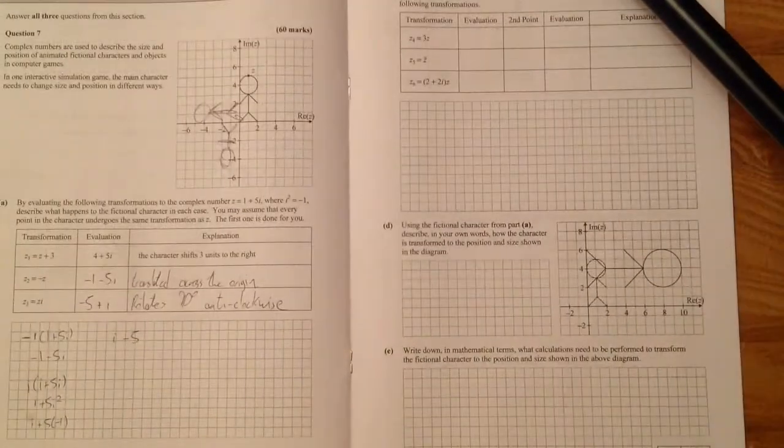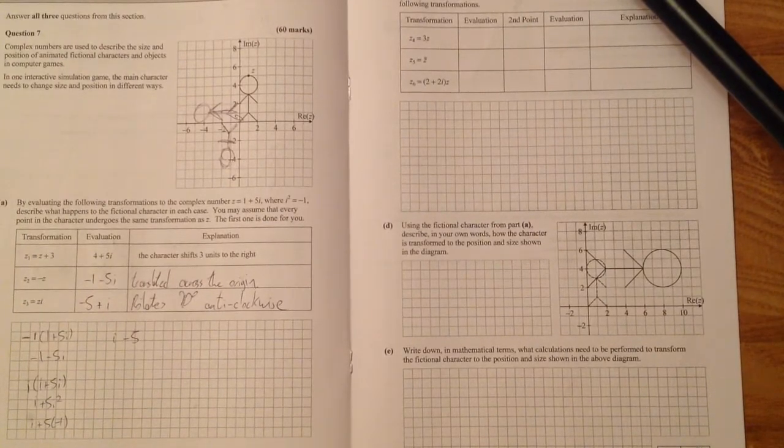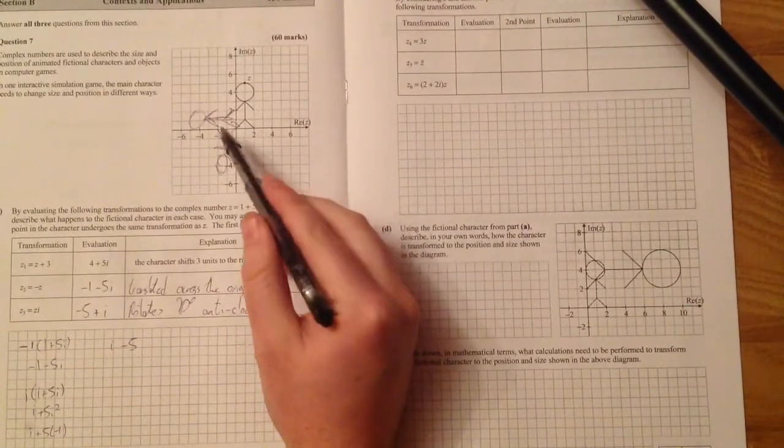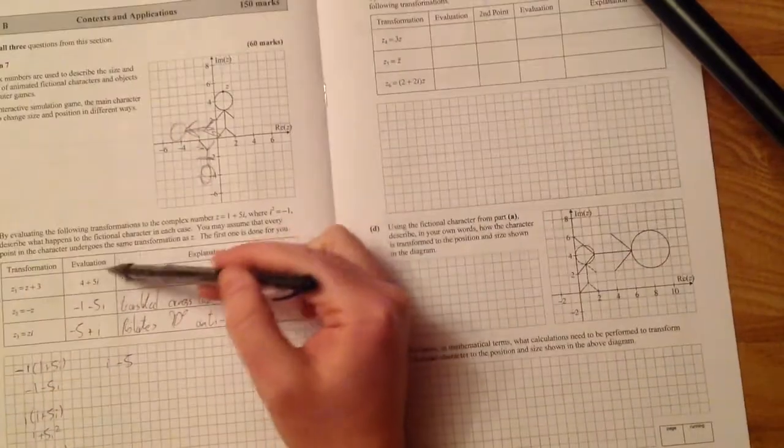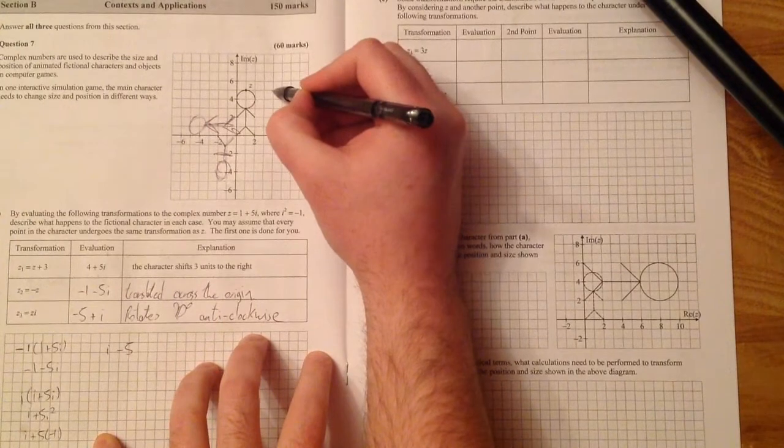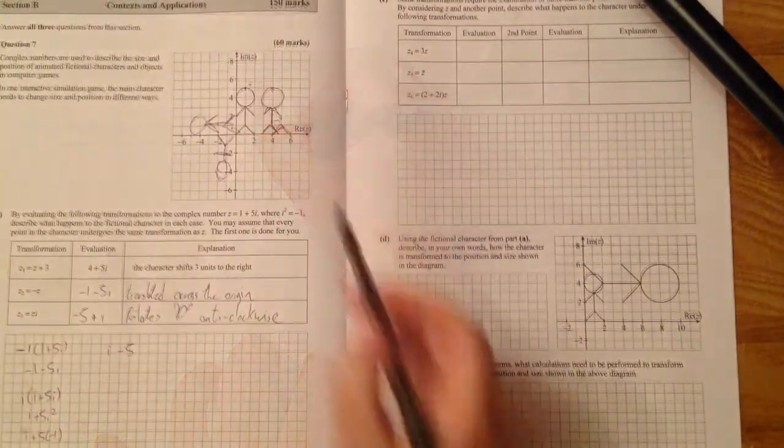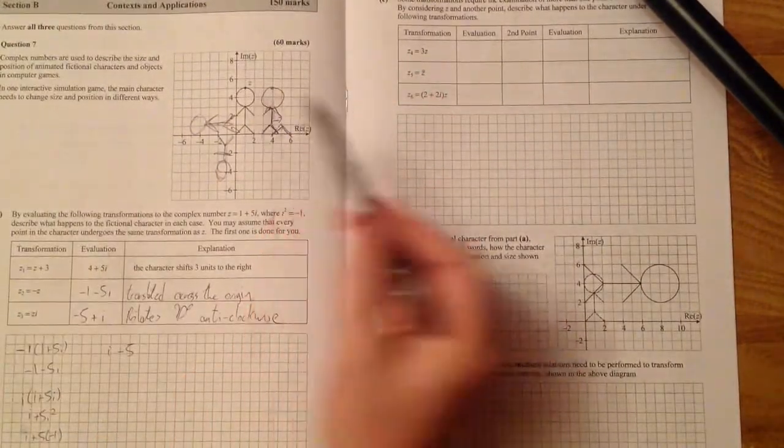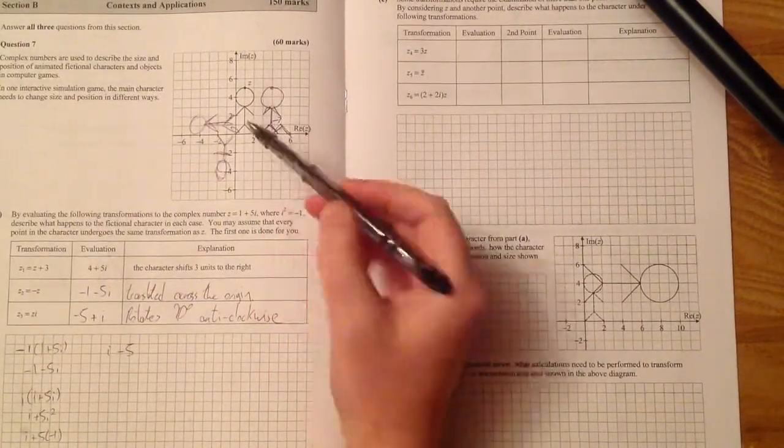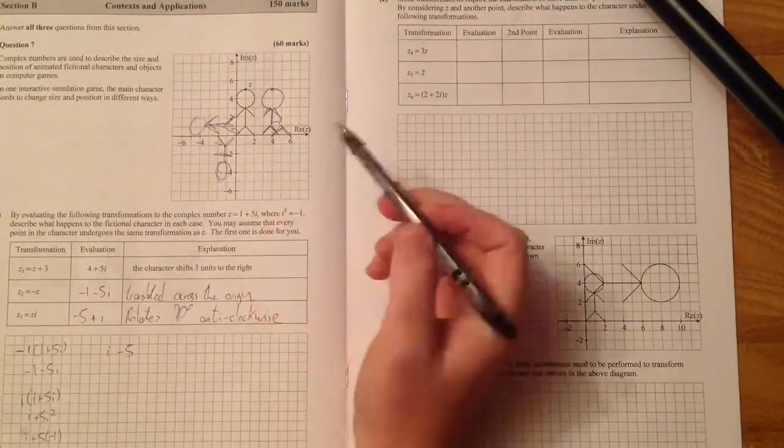Part B says to show the outline of the fictional character under each of the transformations of part A on the Argand diagram above. So really I should have drawn these guys a little bit more accurately. But I didn't actually do the 4 plus 5i. So 4 is here. Plus 5i is up here. So our character has shifted three units to the right as they said to us. So I should have drawn these guys a little bit more accurately. And this is the guy for 4 plus 5i. He shifted 1, 2, 3 units to the right.